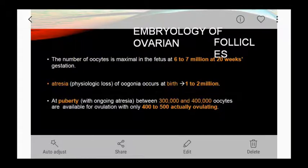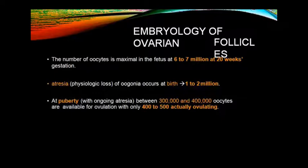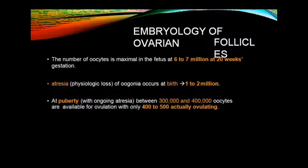Regarding the embryology of ovarian follicles: oocytes are maximal in the fetal stage — approximately 6–7 million at around 20 weeks of gestation. Atresia (physiologic loss) of oogonia begins, so that at birth only 1–2 million oocytes remain. During puberty, ongoing atresia continues, leaving only about 3–4 lakh (300,000–400,000) oocytes available for ovulation. Of these, only 400–500 actually ovulate over a lifetime. I think you will have understood this. Any doubts, you can ask me. The remaining portion will be covered in the next class.